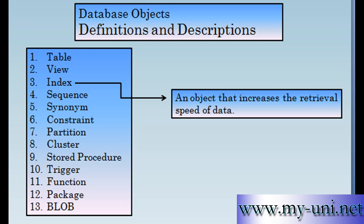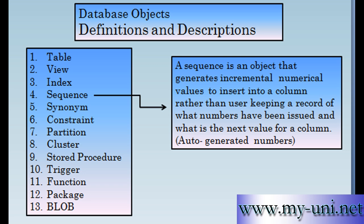Index is an object that increases the retrieval speed of data. A sequence is an object that generates incremental numerical values to insert into a column rather than the user keeping a record of what numbers have been issued and what is the next value for a column.